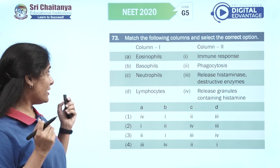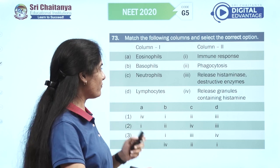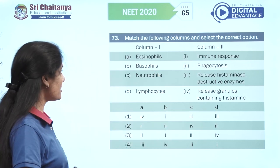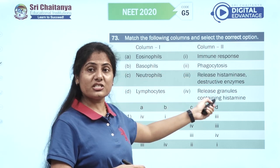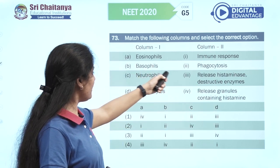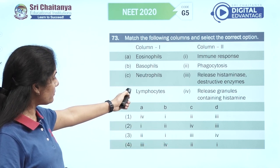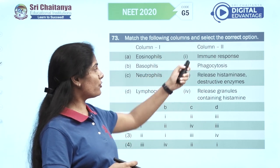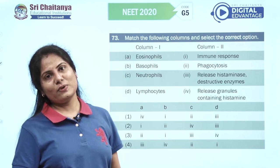Match the following for blood cells — a little trick: if you overlooked histaminase you might have gone wrong. Eosinophils release histaminase with destructive enzymes; basophils release histamine — that would be three and four. Neutrophils exhibit phagocytosis; lymphocytes are for immune response. The green tick goes with the fourth option.